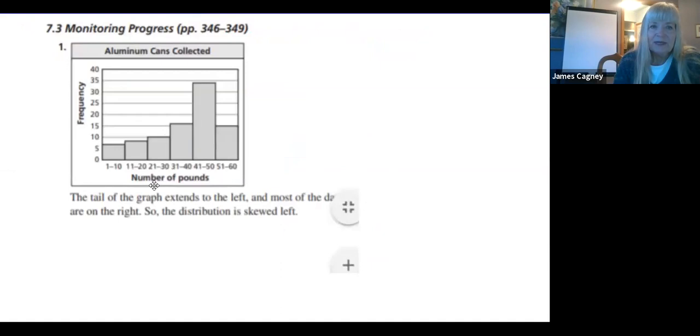When you do this, this one is not symmetric. The tail of the graph here is going to the left. Most of the data is on the right. So this one is skewed to the left. My graph has been pulled over to the left. How'd you do on that one?